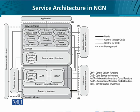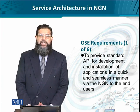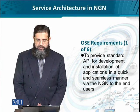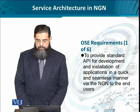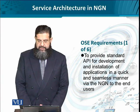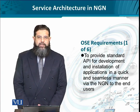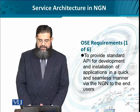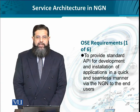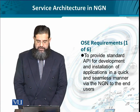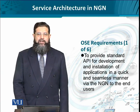The overall service provisioning architecture for NGNs necessitates certain requirements to be met from the open service environment, and all the functional entities we've seen in the OSE are poised to meet these requirements. There are a total of six requirements. The first is to provide a standard application programming interface to develop and install applications in a quick and seamless manner, focusing on convenience. This means that any third party wanting to provide services to end users through the NGN should be facilitated through a standard interface.